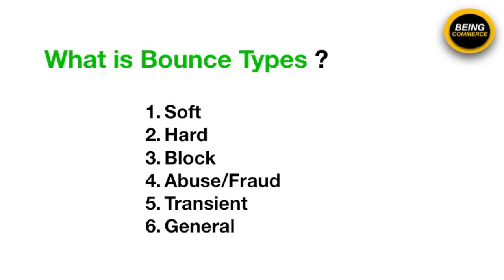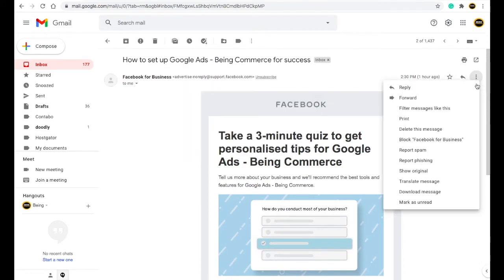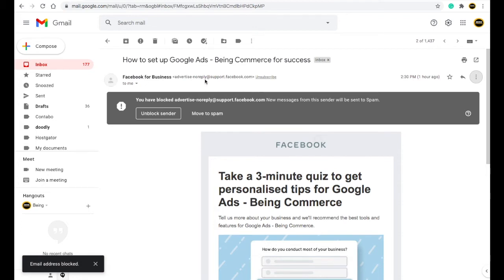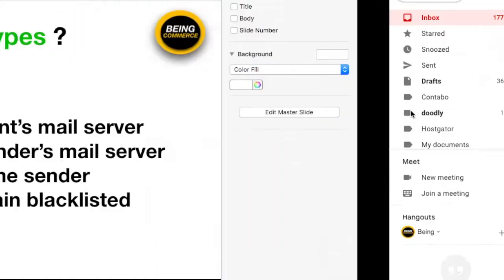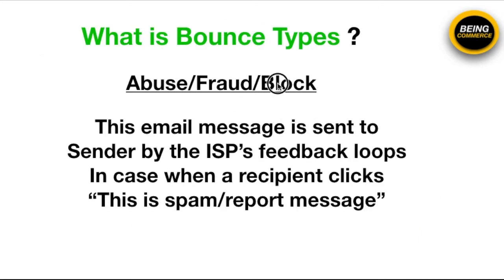Third is called a block bounce. Suppose you go to Gmail and you see an email from Facebook for Business and you block that sender. Now if Facebook's email ID sends you a message again, it will not come to your Gmail inbox because you have blocked them. In this scenario, Facebook's mail server sends a message but since you have blocked it, the message bounces back. This is called a block bounce.